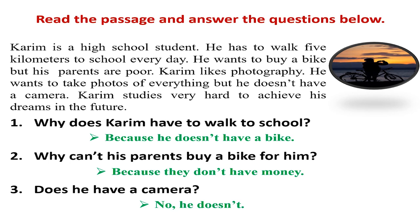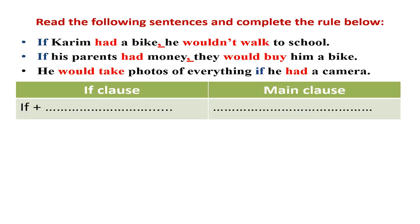Now I'd like you to read the following sentences and complete the rule below. In conditional sentences we have two clauses: the if clause that starts with 'if,' and the main clause which is the result — condition and result. In the if clause, we use simple past: for example, 'if Karim had a bike' — 'had' is simple past.